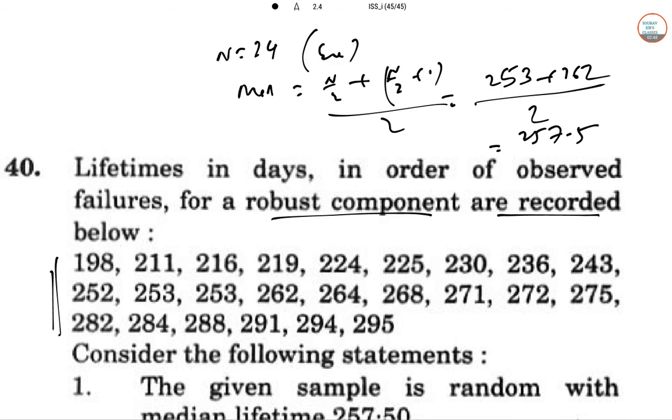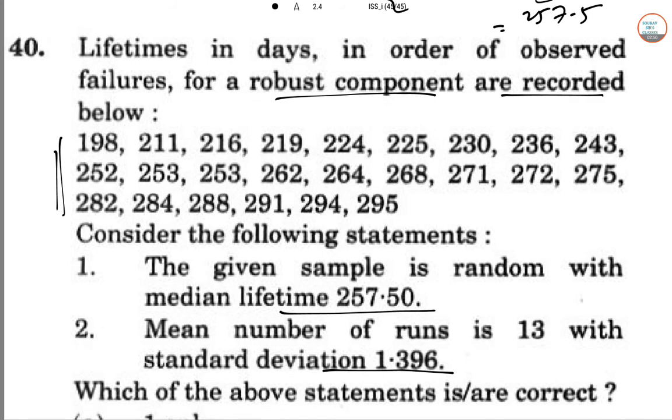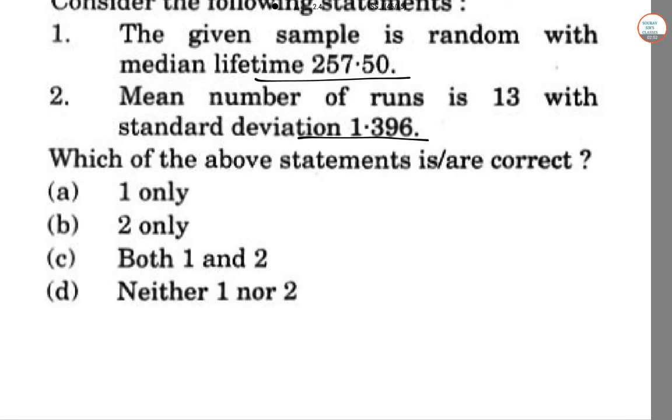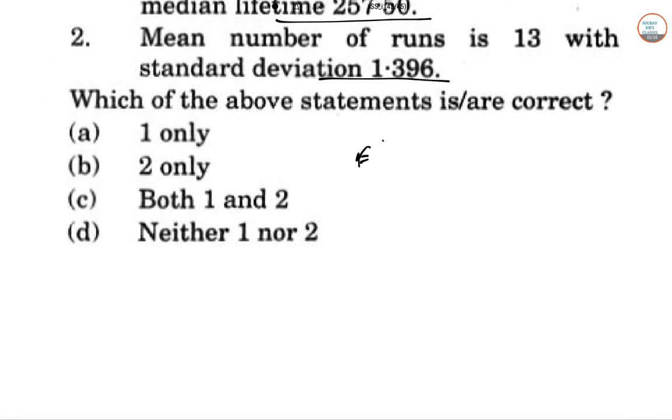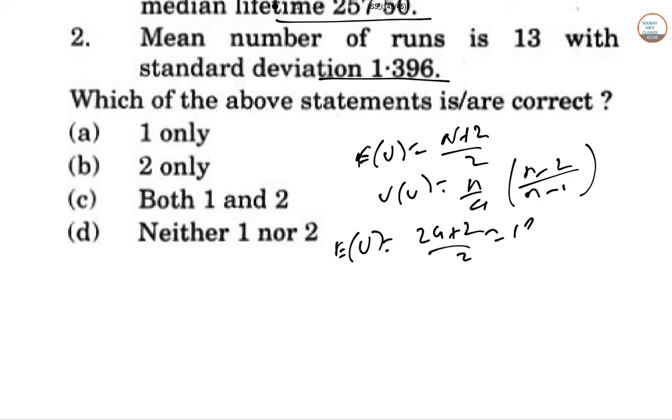Now for the mean number of runs, this is a simple run test. Expectation of U equals n plus 2 by 2, variance of U is n by 4 times n minus 2 by n minus 1. So expectation of U equals 24 plus 2 by 2, that is 13. Variance of U is 24 by 4 times 22 by 23, which equals 5.73.